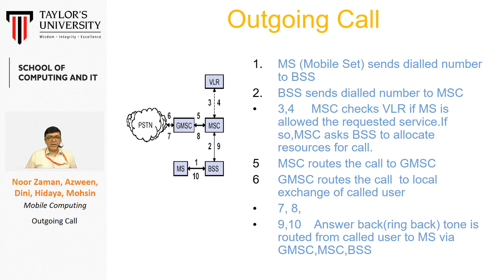The call will be initiated through the user, through the MS. You can follow the arrow and the number of these steps — 1, 2, 3, and so on. The MS will initiate the call. The request will go to the BSS, and the BSS will send the request to the MSC. The MSC will first check about the user via the VLR, where they will verify whether the user is authenticated, active, and has sufficient balance. After that, getting the green signal, the MSC will send a request to the gateway.